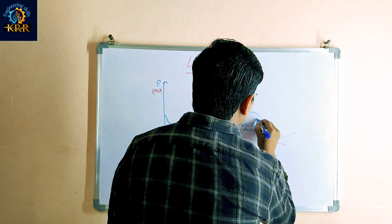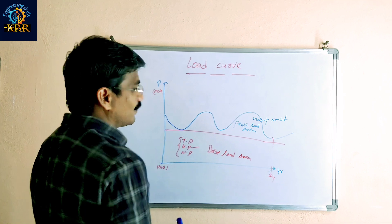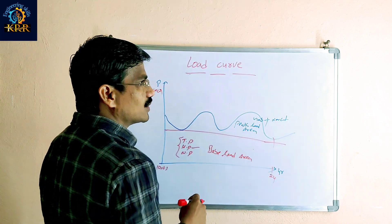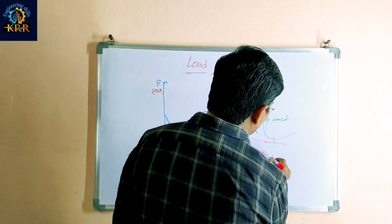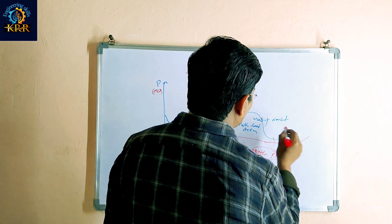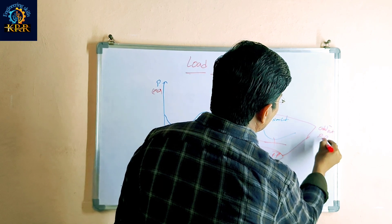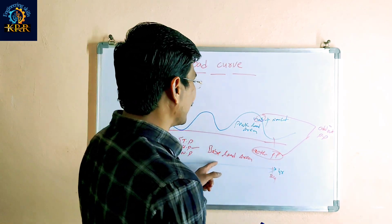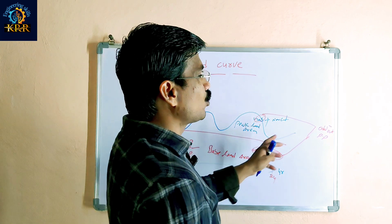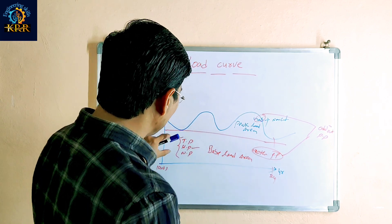Gas power plants plus non-conventional power plants come under the peak load area. One more plant is added to base load — geothermal power plant also comes under base load. Gas and geothermal are called 'odd man out' power plants, because gas is a conventional power plant and geothermal is a non-conventional power plant, yet they interchange roles — that is why these two are called odd man out power plants.